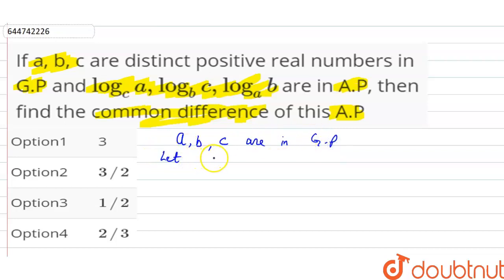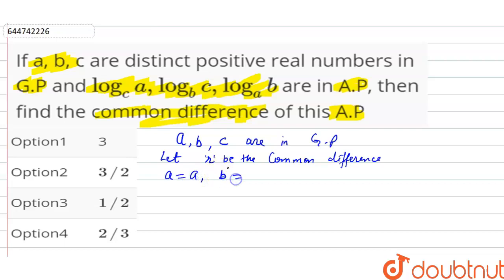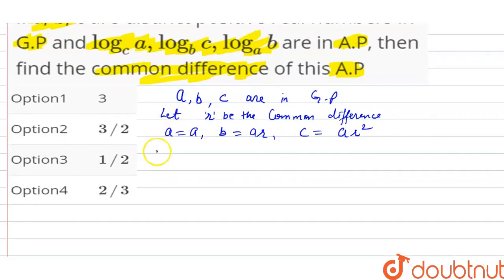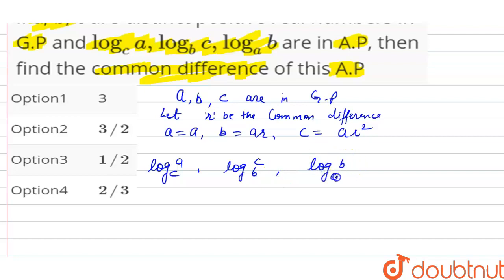Let R be the common ratio. Then A remains A, B equals A·R, and C equals A·R². Now we write down the terms which are in AP: log A base C, log C base B, and log B base A are in AP.